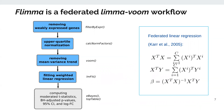FLIMA implements the LIMA-VOOM workflow in which four steps involve federated computations: filtering of weakly expressed genes, upper quartile normalization, removal of mean-variance trend, and fitting of weighted linear regression models. The last step involves no computations on personal data and therefore is performed locally at the aggregator. The results of FLIMA are mathematically equivalent to the results of centralized analysis by the original LIMA-VOOM.